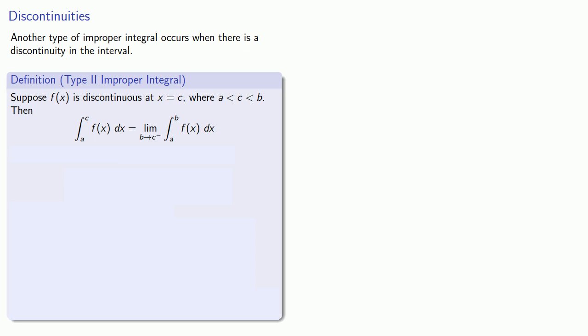Similarly, the integral from c to b as the limit as our lower bound approaches c from above. Provided that the two limits exist, we'll define our integral from a to b as the sum of the two integrals.